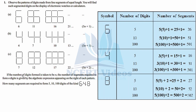Let's first understand the question. It says if the number of digits formed is taken to be n. Here we have one digit, here two digits, here three digits of the same digit — that is 6. So 6 appears 1 time, 2 times, 3 times. n represents the number of times a digit appears. The number of segments required to form n digits is given by the algebraic expression on the right. Segments are these lines: 1, 2, 3, 4, 5, 6 — so to make digit 6 we need 6 segments.